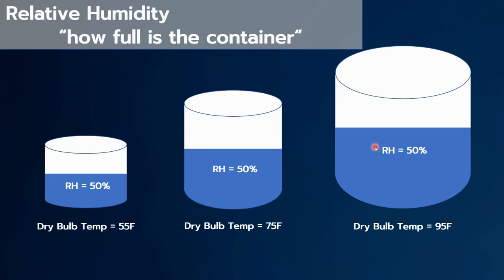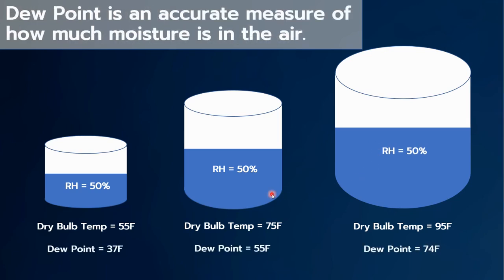When we look at dew point, let's say we took the first condition — RH of 50%, dry bulb of 55 — and calculated the dew point, which in this case is 37. We did the same for the other two containers: the dew point would be 55, and this dew point would be 74. Now as you can see, as the volume of water increases, our dew point increases.